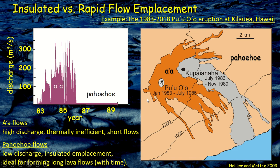Now let's examine insulated emplacement mechanisms — endogenous growth — starting with the larger-scale features. Here is a slide comparing both the mode of lava emplacement and the magma discharge rate per unit time. To our left is the discharge plot over the first six years of the Pu'u O'o–Kupaianaha eruption, which ended in 2018 after 35 years.